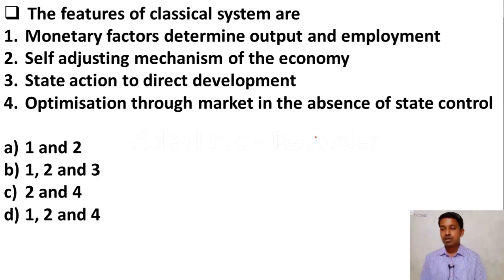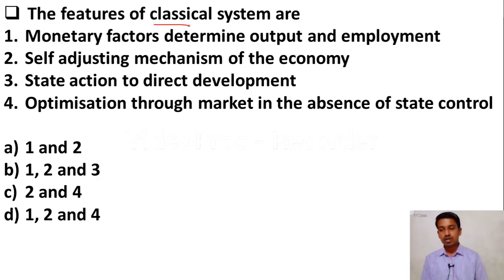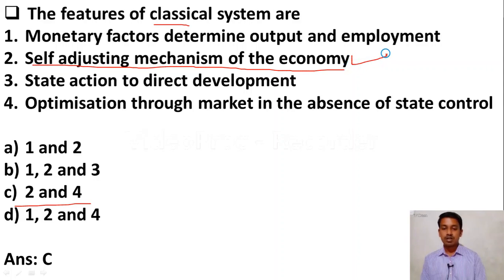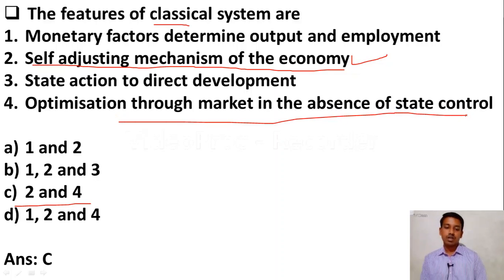The features of the classical system are: first — monetary factors determine output and employment; second — self-adjusting mechanism of the economy; third — state action to direct development; fourth — optimization through market in the absence of state control. The right answer is Option C — only two and four. The classical economy has a self-adjusting mechanism and there is no role of the government; optimization occurs through the market in the absence of state control.